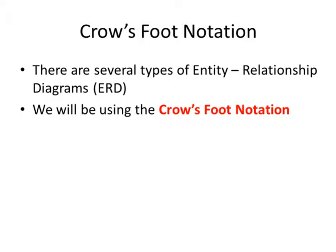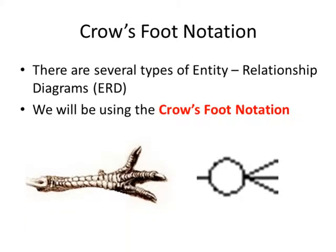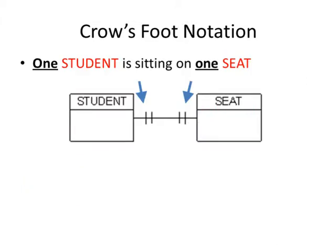Now let's look at how we draw relationships in the ER Diagram using the Crow's Foot Notation. The first type is the one-to-one representation. For example, with the Student table and the Seat table, if one student is assigned to one seat, this is represented using two vertical lines on each side of the relationship.